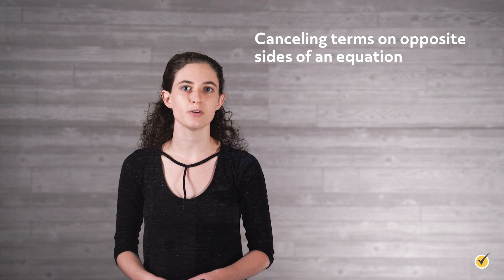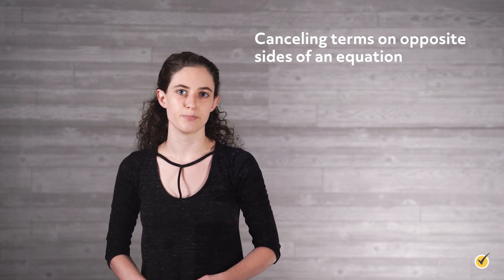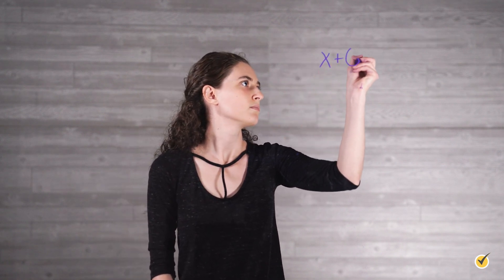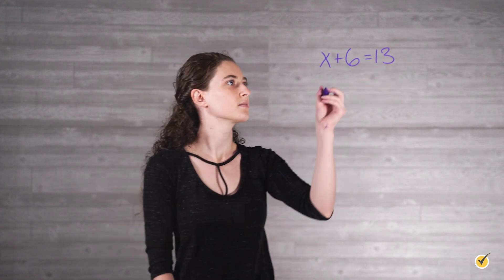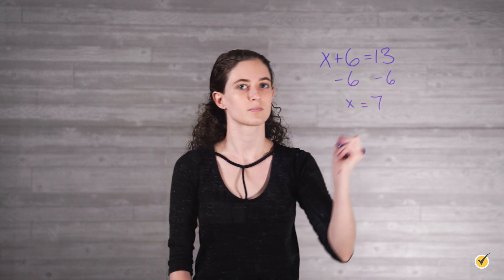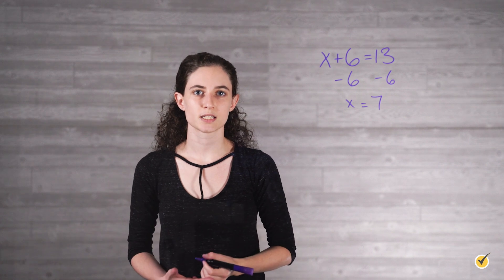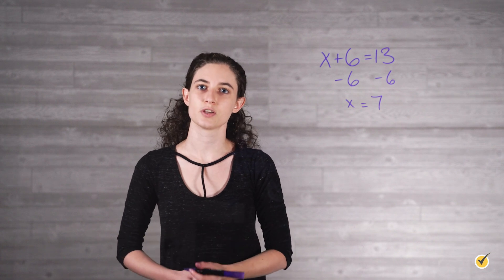When we add or subtract a term to both sides of an equation, we're making a zero by adding the opposite of a term. In the equation x plus 6 equals 13, we would solve by subtracting 6 from both sides. By subtracting 6 from both sides, we made a zero on the left side, since 6 minus 6 equals 0, allowing us to solve the equation.